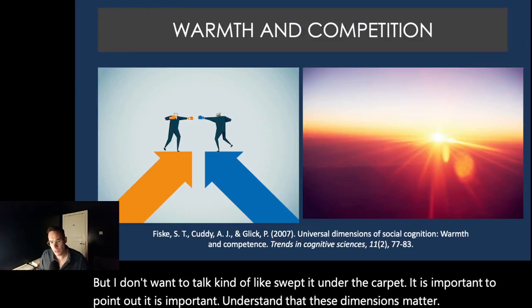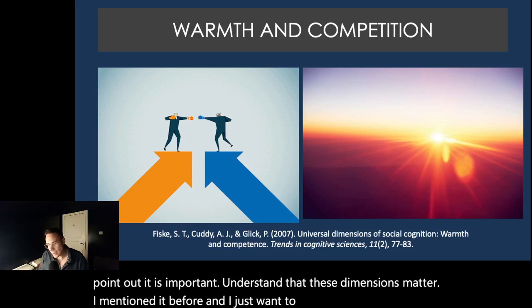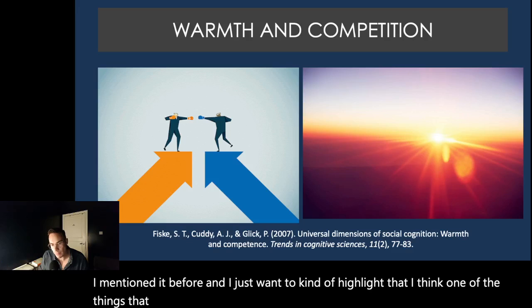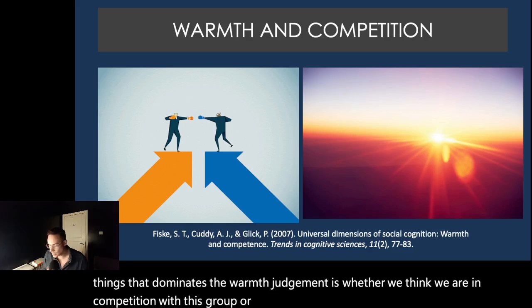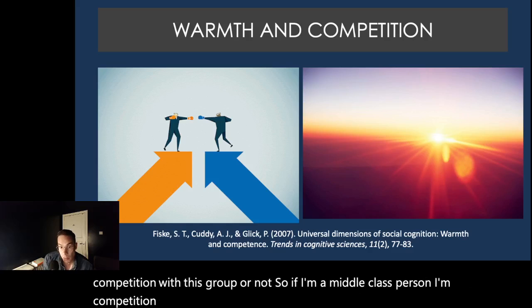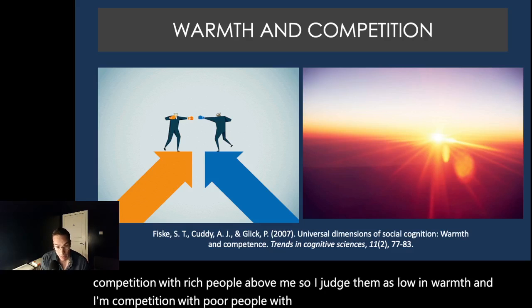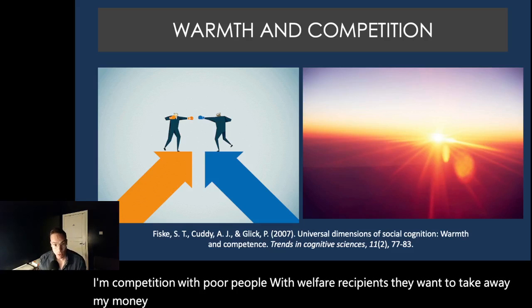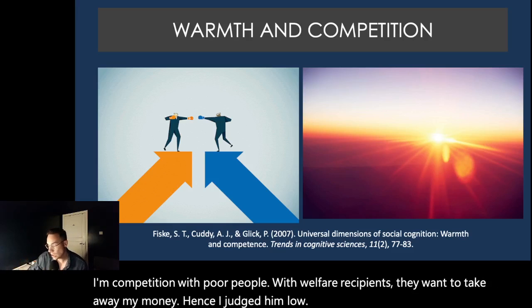I mentioned it before, and I just want to highlight that I think one of the things that dominates the warmth judgment is whether we think we're in competition with this group or not. So if I'm a middle class person, I'm in competition with the rich people above me, so I judge them as low in warmth. And I'm in competition with poor people, with welfare recipients. They want to take away my money, hence I judge them low in warmth. So warmth and competition are often related.